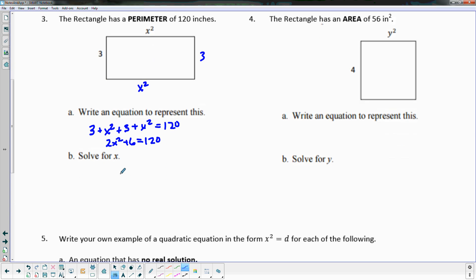For the area, it says this rectangle has an area of 56 square units. Area is going to be your two measurements of a rectangle multiplied together, so we're going to have 4y² equals 56.